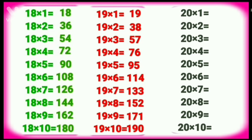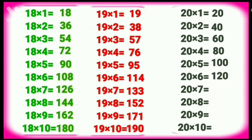Table of Twenty. Twenty ones are twenty. Twenty twos are forty. Twenty threes are sixty. Twenty fours are eighty. Twenty fives are one hundred. Twenty sixes are one twenty. Twenty sevens are one forty. Twenty eights are one sixty. Twenty nines are one eighty. Twenty tens are two hundred.